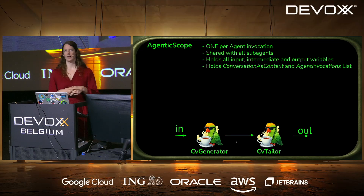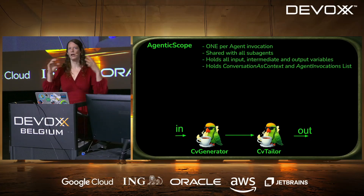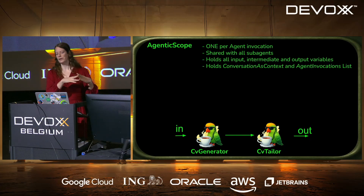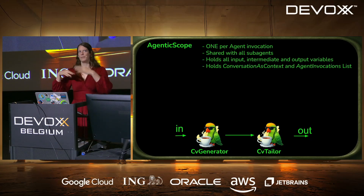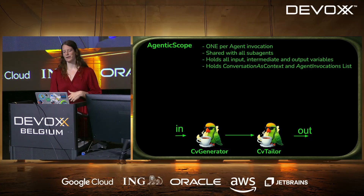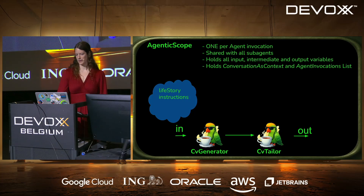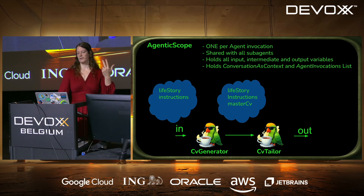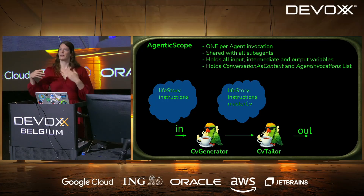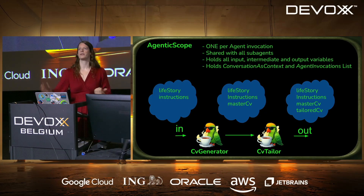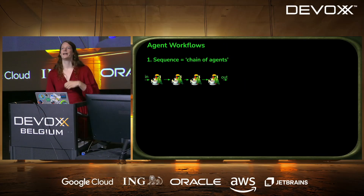An important concept: how do we manage all the variables flying around? They are all part of an Agentic Scope — there is only one per agentic system, no matter how many layers or depth. This single scope holds all input, intermediary, and output variables, as well as the conversation context and agent invocation list. In our example, the life story and instructions go in, the CV Generator adds the master CV, and the CV Tailor adds the tailored CV.